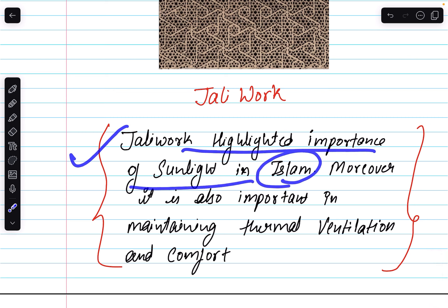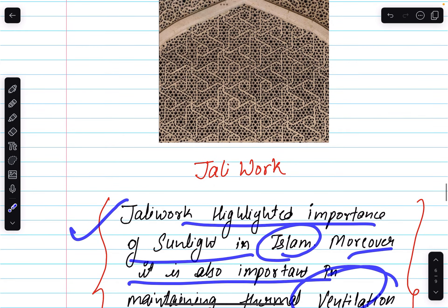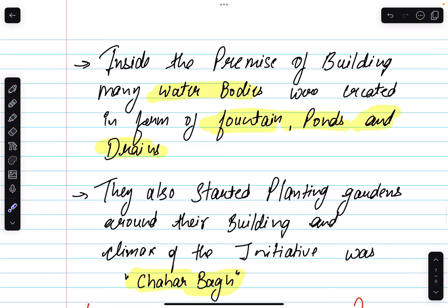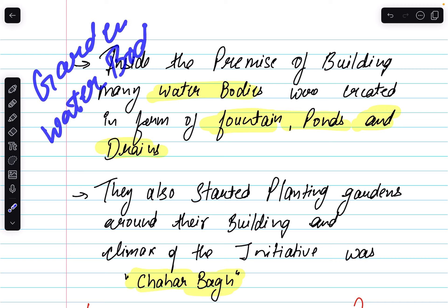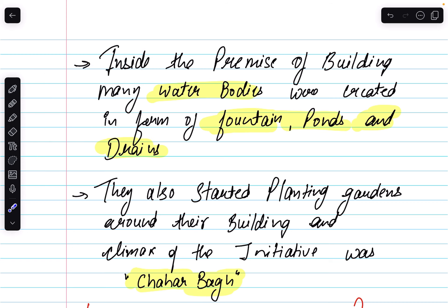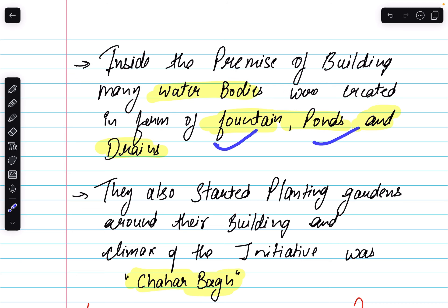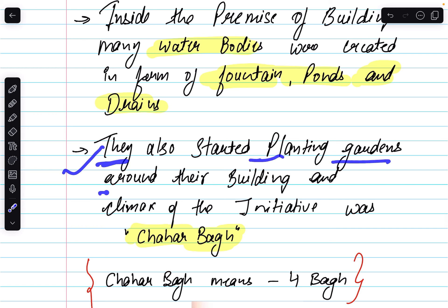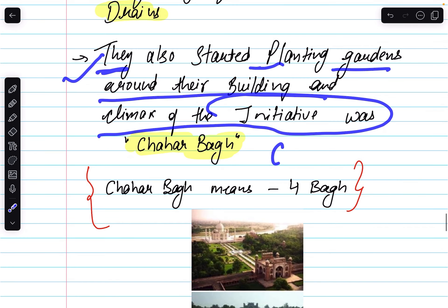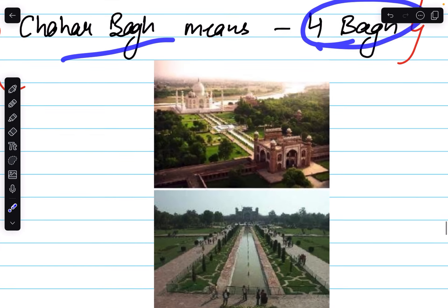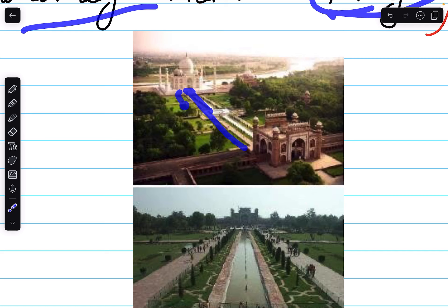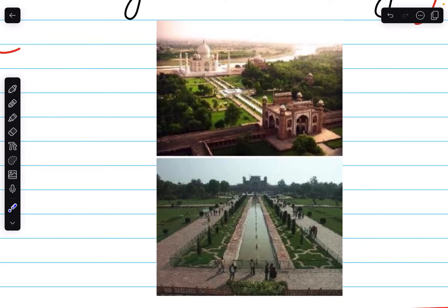Jali work highlighted the importance of sunlight in Islam and is also important in maintaining thermal ventilation and comfort. The sixth feature is gardens and water bodies, which were also introduced into the Islamic architecture fusion in India. Inside the premises of buildings, many water bodies were created in the form of fountains, ponds and drains. Gardens were also planted around buildings, and the climax of these initiatives was the Chaharbagh. Chaharbagh — as you can see in the photo of the Taj Mahal with its proper garden structure — is your prime example of Indo-Islamic architecture fusion.